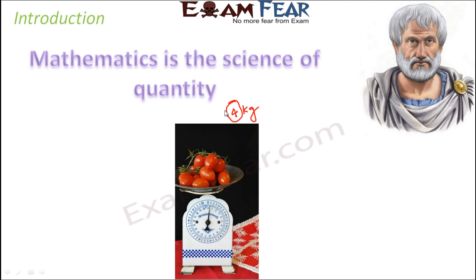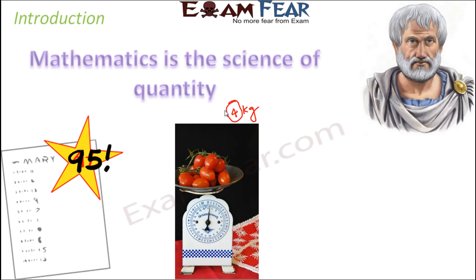You need a number to describe how much tomatoes you needed. Similarly, if you scored 95 out of 100 in your mathematics exam, you're very happy - and of course you should be! But what is this 95? It defines how many answers were correct in your answer sheet. That's what your score is all about. This 95 is again a number.